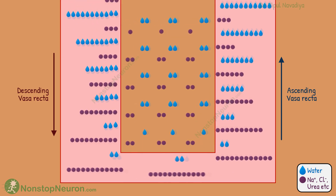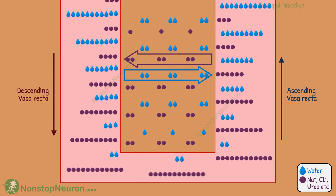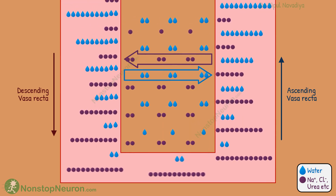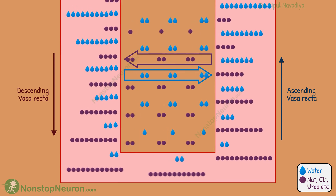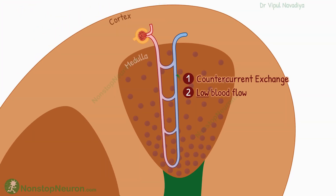So this is how the countercurrent exchange mechanism works. The descending and ascending vasa recta are exchanging solutes and water — this is the reason why this mechanism is called countercurrent exchange. So this is one feature of vasa recta that prevents the dissipation of medullary hyperosmolarity.